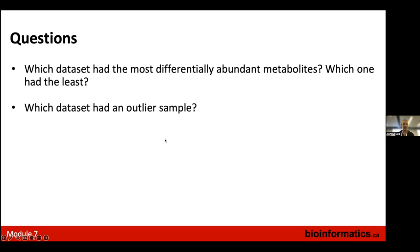The question about which dataset had an outlier sample ended up being a trick question — it had to do with the GC-MS data, which had a lot of missing values. Depending on which missing value imputation method you selected, and whether you auto-scaled when normalizing, you could see outliers in the PCA. That's normal with missing values, because different approaches make different assumptions. Auto-scaling can really impact whether a few metabolites heavily influence the PCA scores plot. The outlier wasn't really real — it was created by the data analysis choices, which is why it's important to look at the PCA plot.